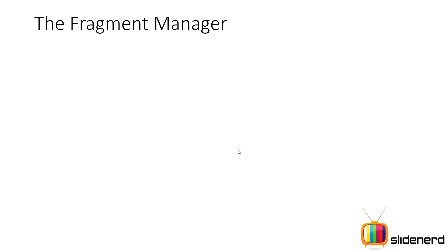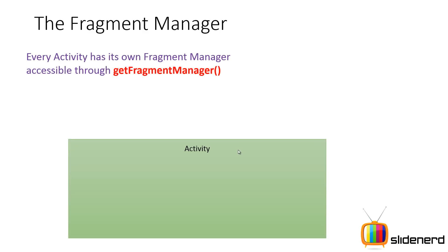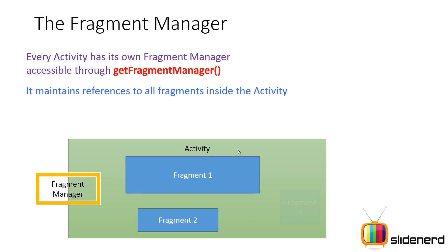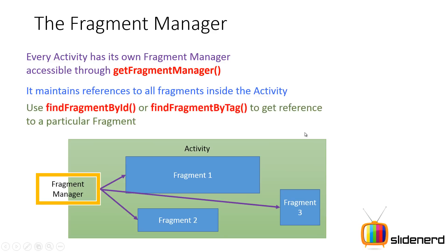Before we start adding fragments in Java, we need to understand certain things. One being the fragment manager — every activity has its own fragment manager. This fragment manager is responsible for maintaining references to all the fragments present inside the activity. You can access one of the fragments by calling findFragmentById or findFragmentByTag to get a reference to that particular fragment.